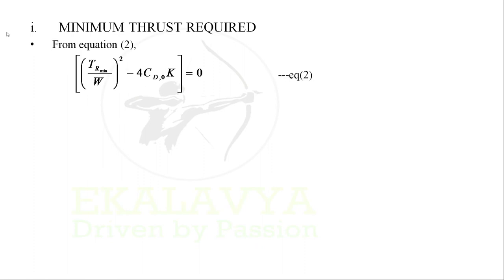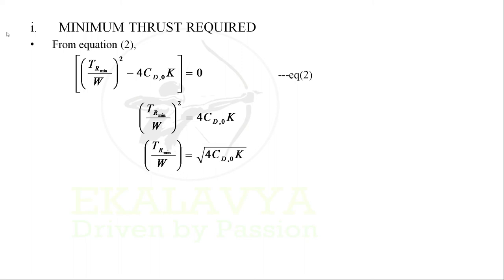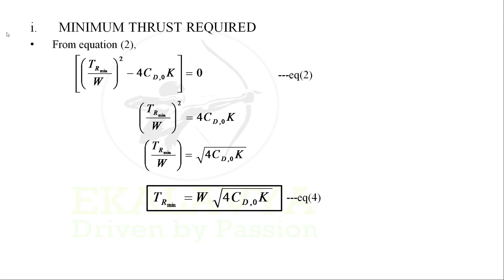Let's start with minimum thrust required. In equation 1, in order to make two points coincide, we equate the second term in the numerator of the RHS to zero, giving rise to equation 2. In term T_R minimum, moving 4·CD0·k to the RHS and taking square root on both sides, we end up with T_R minimum equal to W times the square root of 4·CD0·k, which we denoted as equation 4 in video lecture 16. Equation 4 is the equation for minimum thrust required.